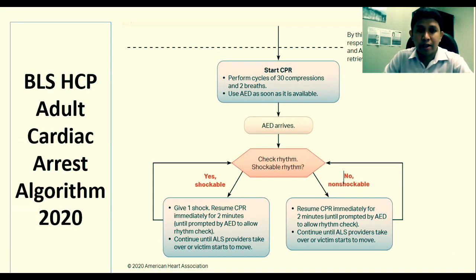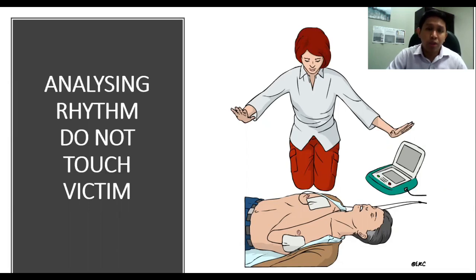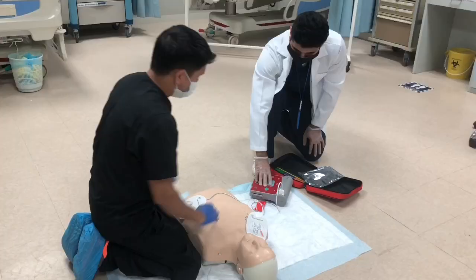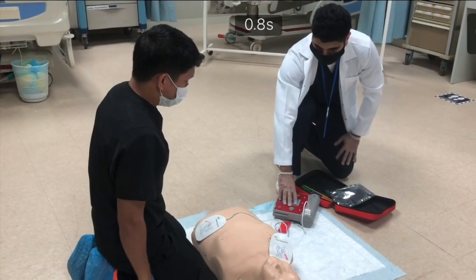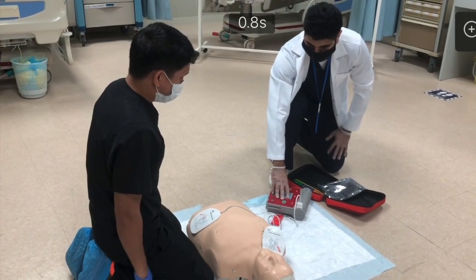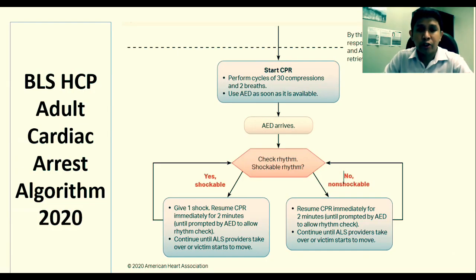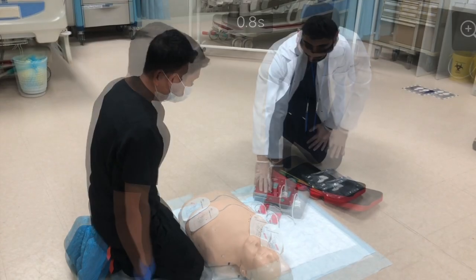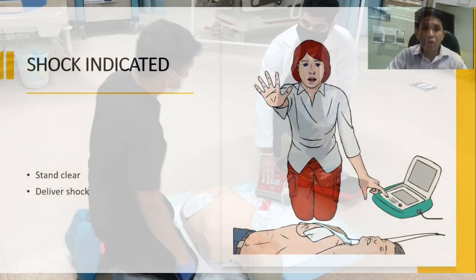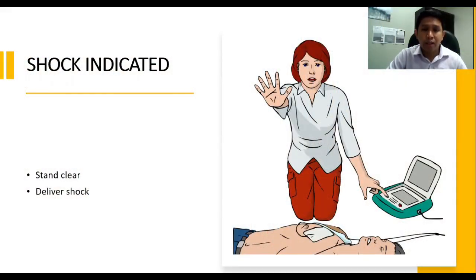Check rhythm — the machine will indicate whether shock is advised or no shock is advised. Stay clear of patient. Analyzing heart rhythm. Shock advised — stay clear of patient. If shock is advised, give one shock and then resume CPR immediately for two minutes until prompted again by the AED. Continue until the ALS provider takes over or the victim starts to move. Both should stand clear before pressing the shock button: I'm clear, you're clear, everybody clear.